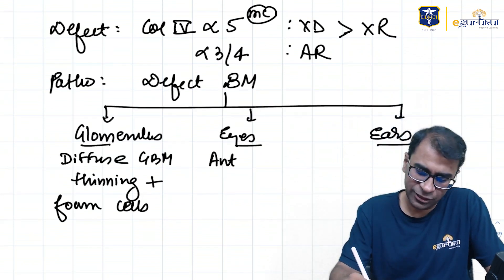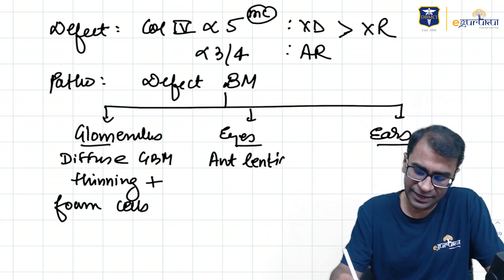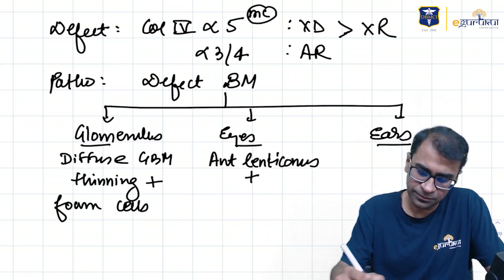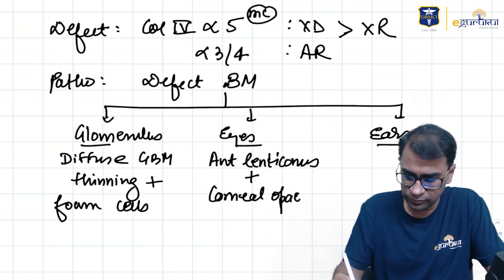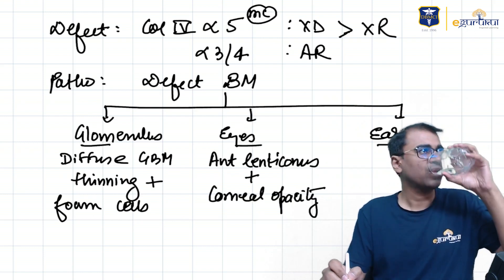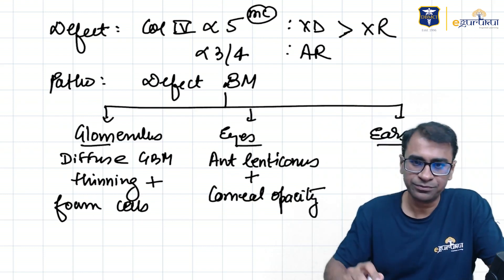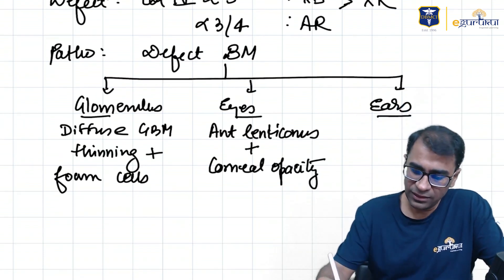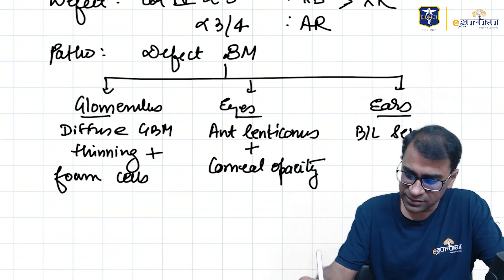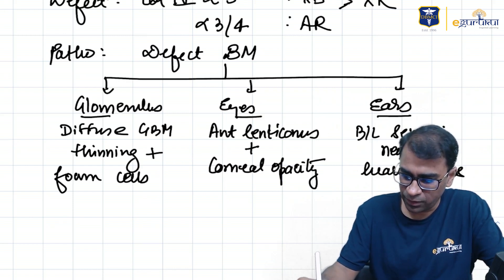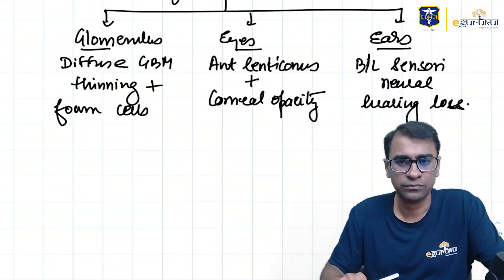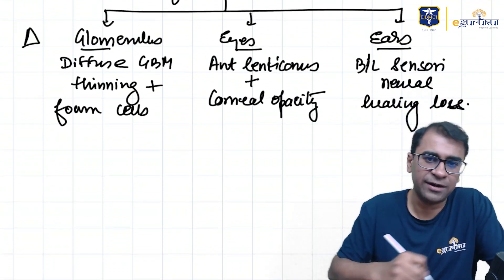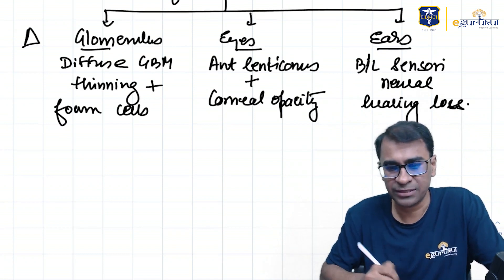In the eyes, it can lead to anterior lens dislocation called anterior lenticonus, plus corneal opacity. In the ears, it leads to bilateral sensorineural hearing loss. These three features — kidney involvement, eye changes, and hearing loss — make the triad of Alport's syndrome.